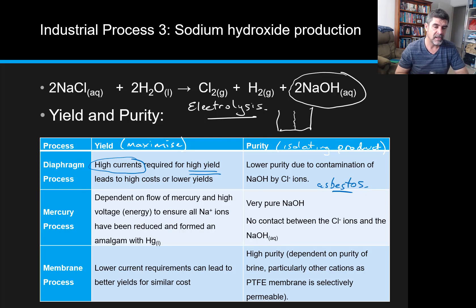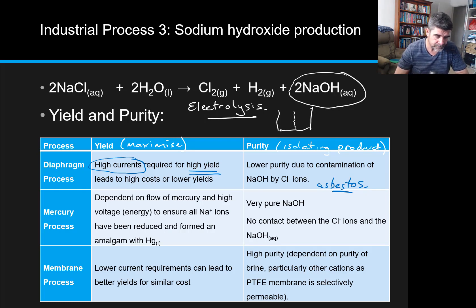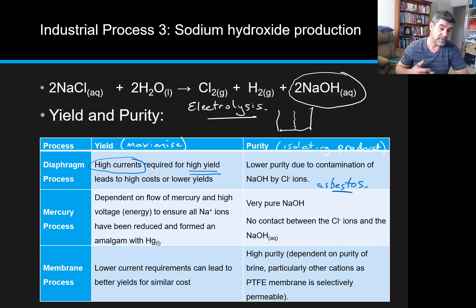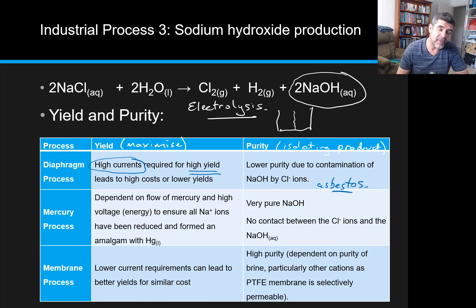But the problem with the diaphragm process wasn't just about asbestos — it was also about the fact that you either had very high costs in order to produce high yields, or you had to drop your yields.